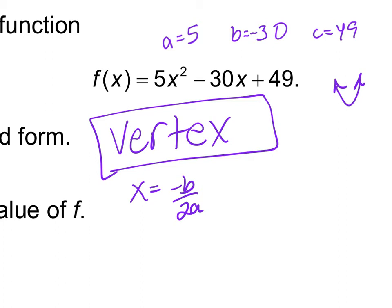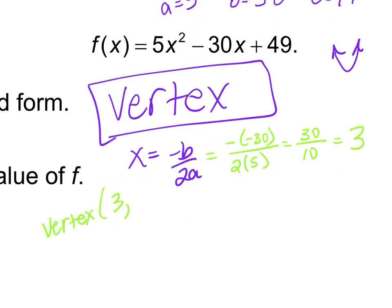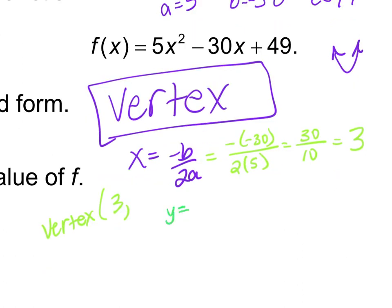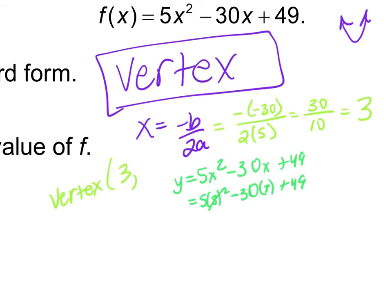To find the vertex: negative (-30) divided by 2 times 5 — that's 30 divided by 10 — x equals 3. To find the y part, we plug in x = 3: 5 times 3 squared minus 30 times 3 plus 49. 3 squared is 9, times 5 is 45, minus 90, plus 49. 45 minus 90 is negative 45, plus 49 gives me 4. My vertex is at (3, 4).